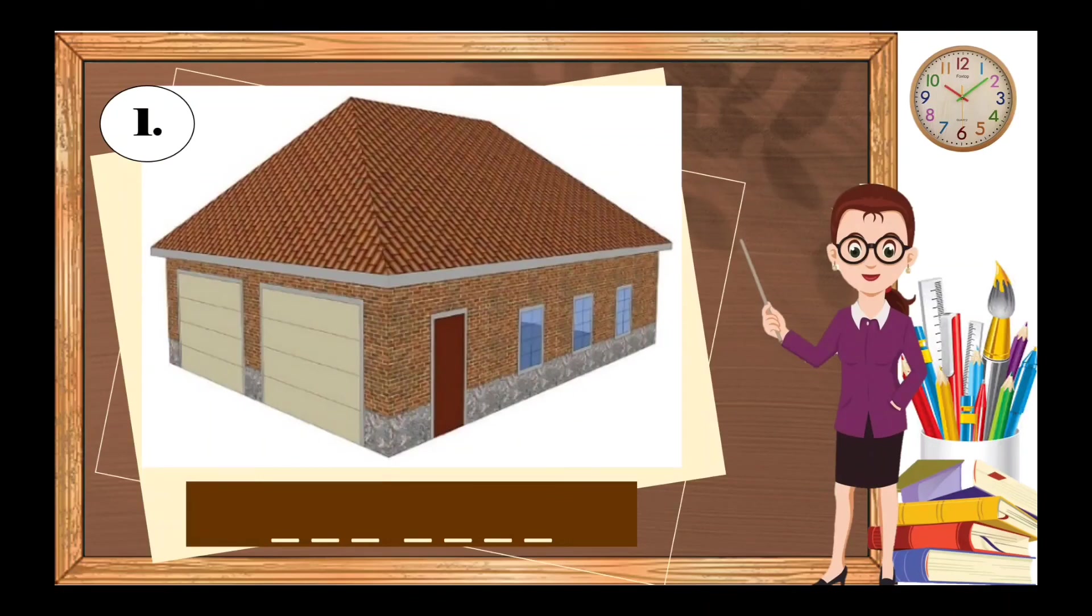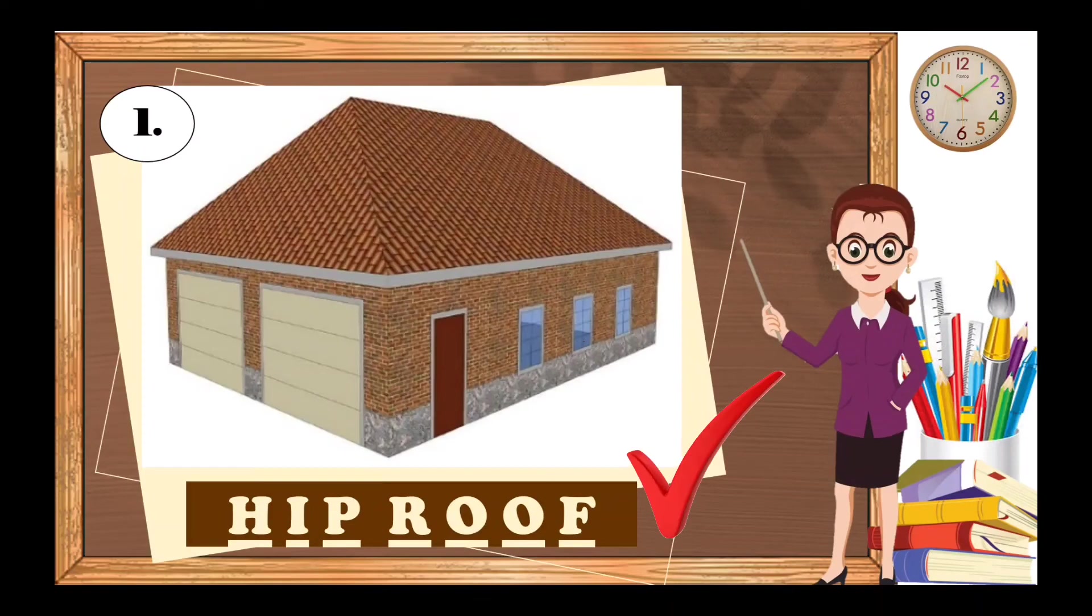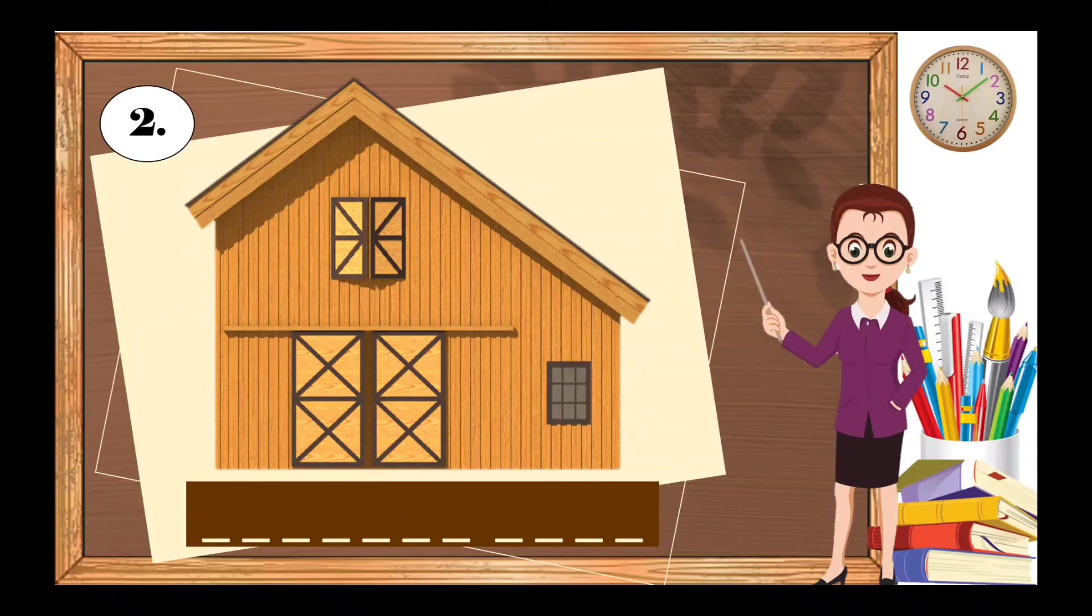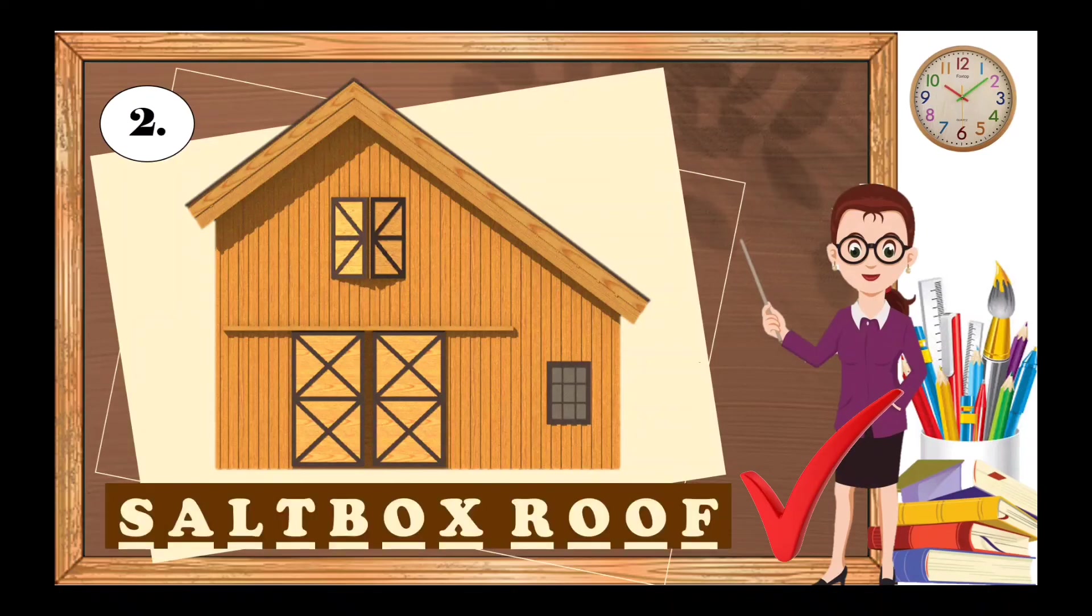What do you call this type of roof? The correct answer is hip roof. Very good. The second roof. Great! This is a saltbox roof.